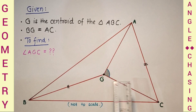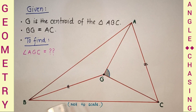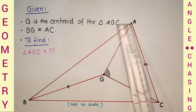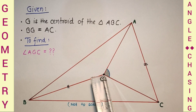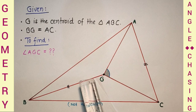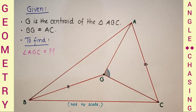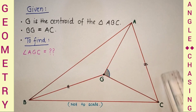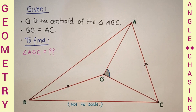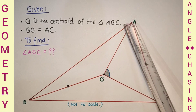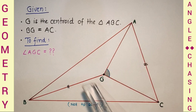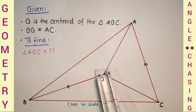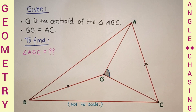Today we will discuss this simple question. We are given a triangle ABC. G is the centroid of triangle ABC, and we are given that the length of BG is equal to the length of AC. We have to find the angle AGC.